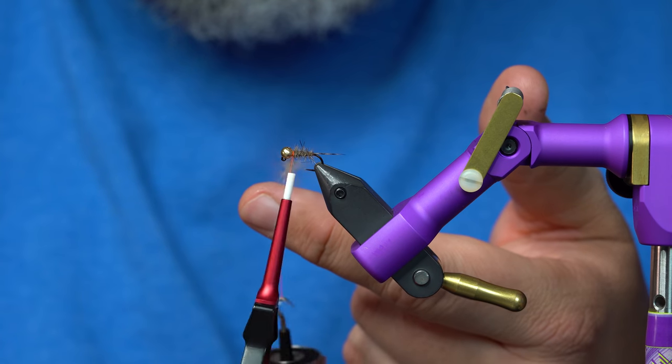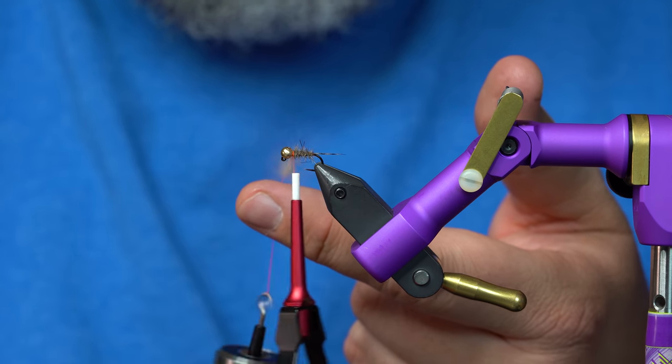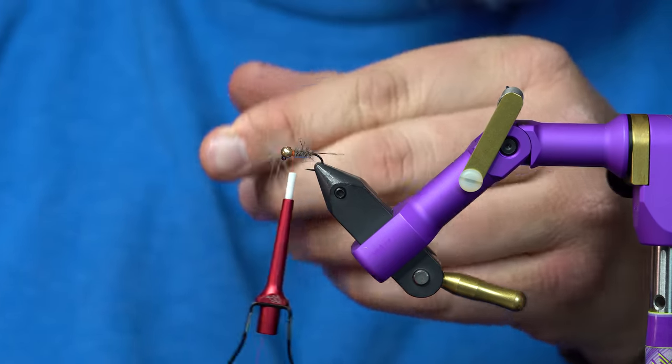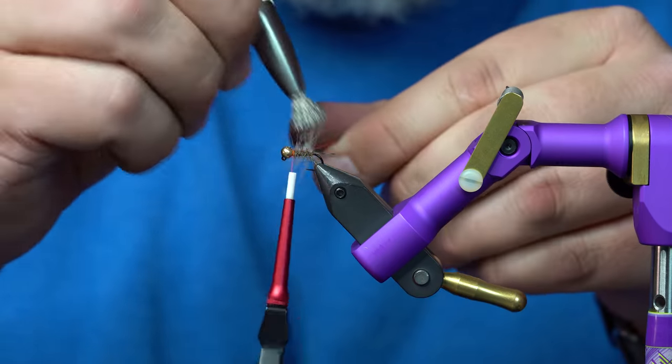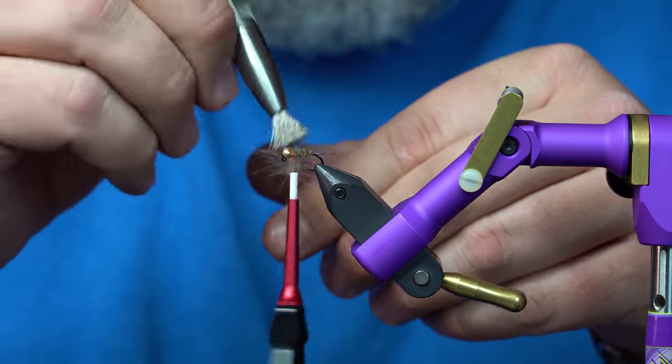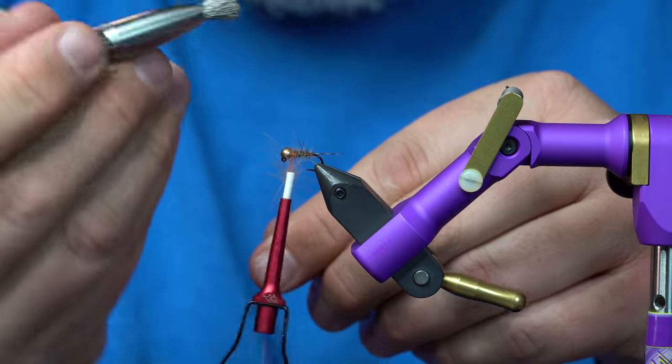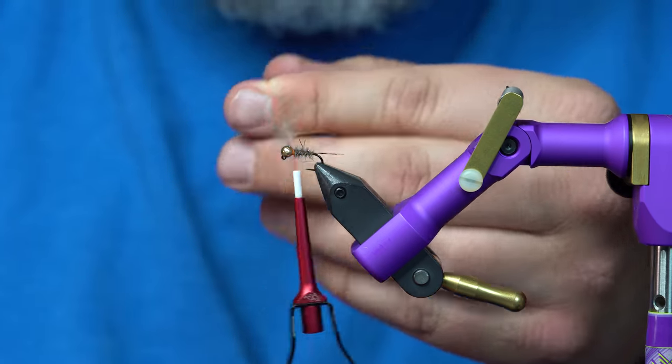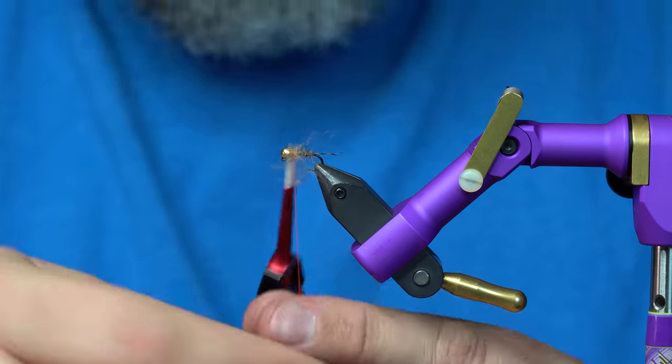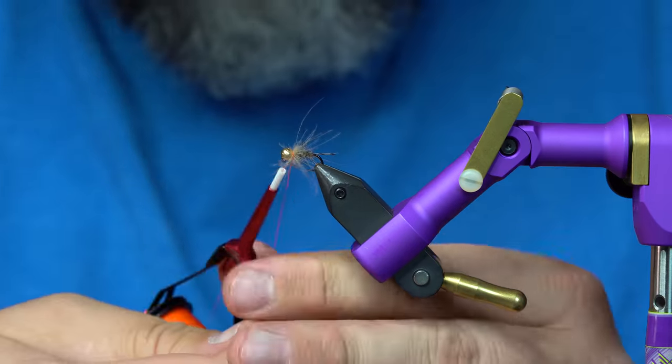Another cool thing about this is if you have CDC that's matted down, that loop is actually pretty clean, but this is gentle enough that you can come in here and pick out your dubbing loops without the steel brush breaking your thread. I'll just wrap that CDC around. This is kind of an unruly looking fly.